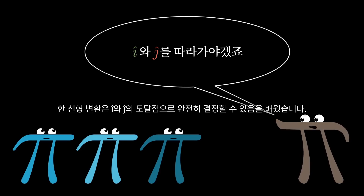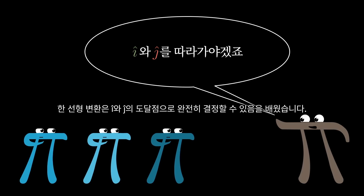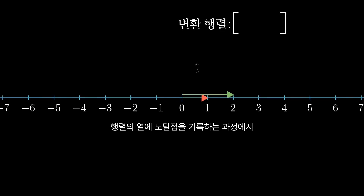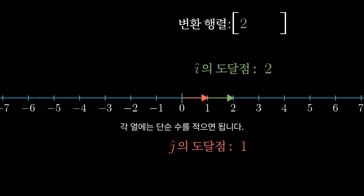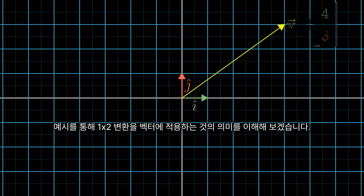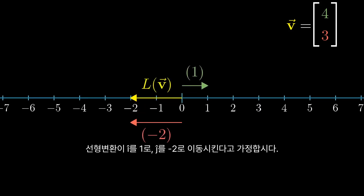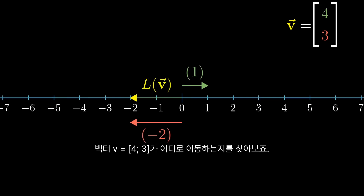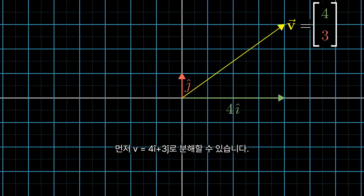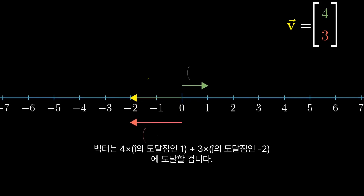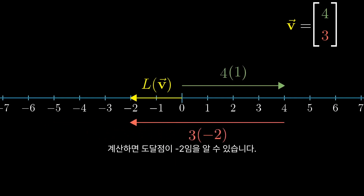As with the cases we've seen before, one of these linear transformations is completely determined by where it takes i-hat and j-hat. But this time, each one of those basis vectors just lands on a number. So when we record where they land as the columns of a matrix, each of those columns just has a single number — this is a 1 by 2 matrix. For example, a linear transformation that takes i-hat to 1 and j-hat to negative 2: to follow where a vector with coordinates, say [4, 3], ends up, think of breaking it up as 4 times i-hat plus 3 times j-hat. After the transformation, the vector will be 4 times 1 plus 3 times negative 2, which lands on negative 2.